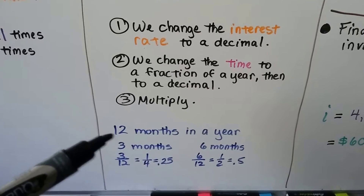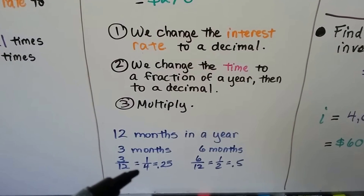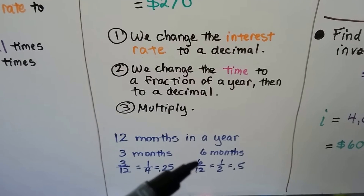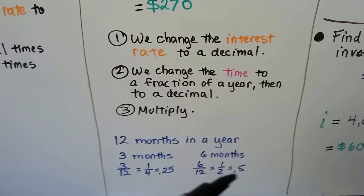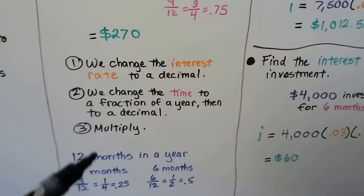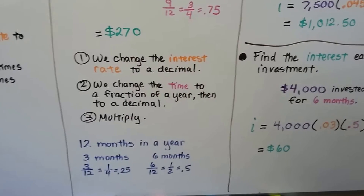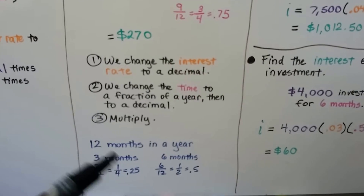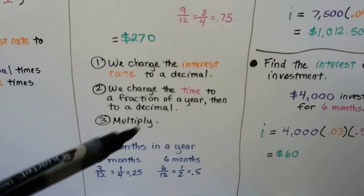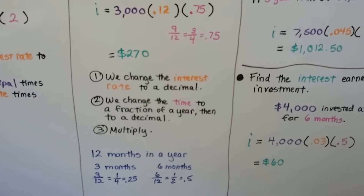Because there are 12 months in a year: three months would be 3 out of 12, which is one-fourth of the year, or 0.25. Six months would be 6 out of 12, which is half the year, or 0.5. And even if it were seven months, it would be 7 out of 12. Loans are usually for years, so you may not need this often, but just know that you have to change months to a fraction.